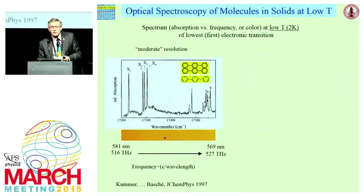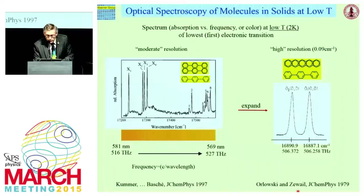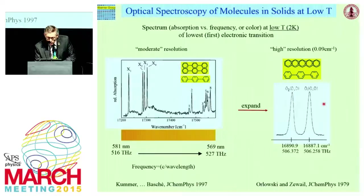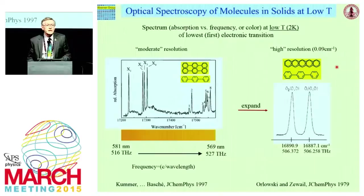This is still not resolving the shapes of these origins. If you do higher resolution spectroscopy, you might see a spectrum like this from Erlowski and Zewail back in 1979, looking at penicine in peritrophenyl — a similar rigid, flat, aromatic molecule. Here only two of the origins are shown, and now it's beginning to look like a Gaussian profile. Resolution is pretty good: 0.09 inverse wave numbers. But the question is, is this all there is? And of course there is a lot more.